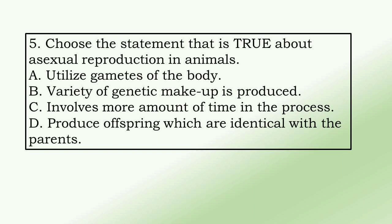5. Choose the statement that is true about sexual reproduction in animals. a. utilize gametes of the body, b. variety of genetic makeup is produced, c. involves more amount of time in the process, d. produce offspring which are identical with the parents.